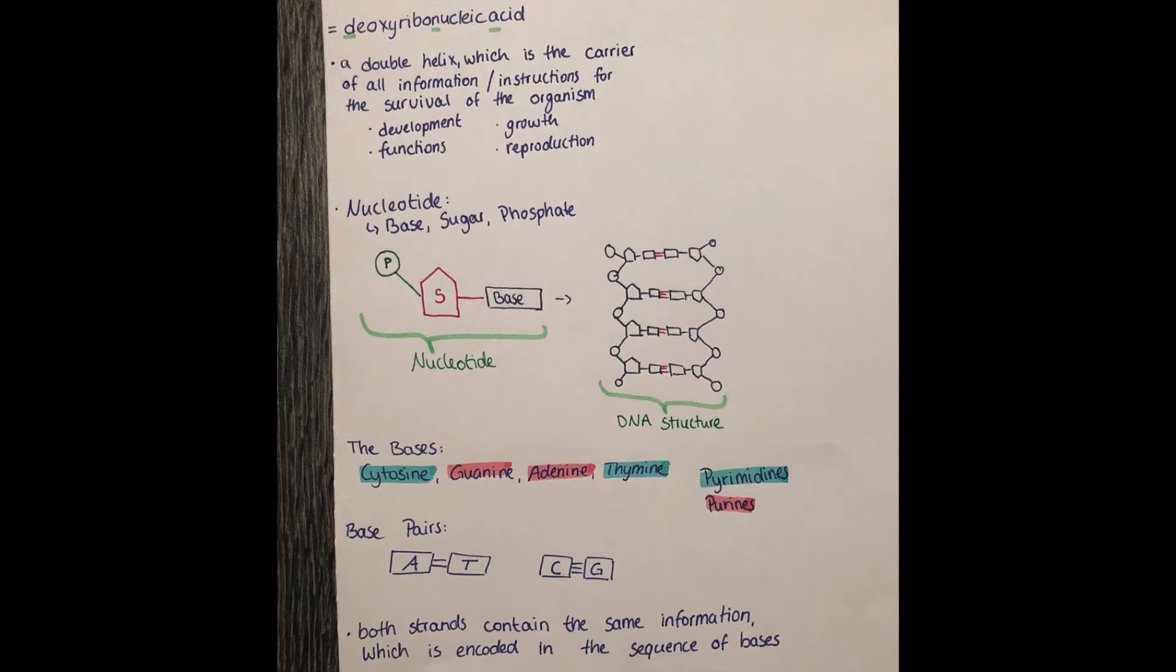And these base pairs are connected to each other with hydrogen bonds. Adenine and thymine are connected by two hydrogen bonds—that's due to their molecular structure—and cytosine and guanine are connected by three bonds.